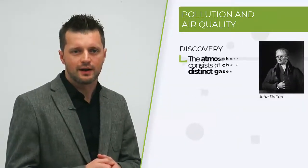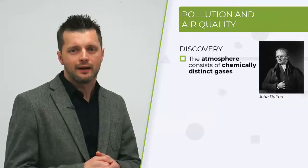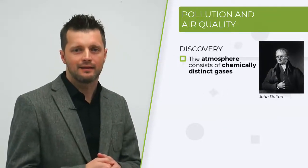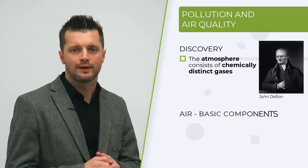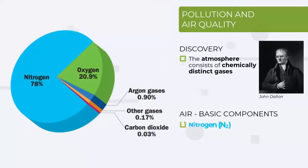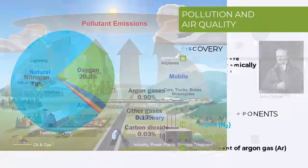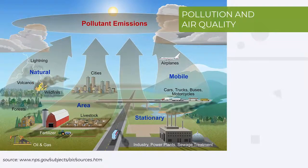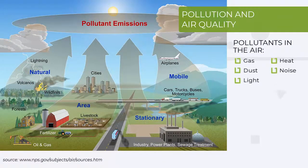At the beginning of the 19th century, scientist John Dalton discovered that the atmosphere consists of chemically distinct gases. Dalton identified the basic components of the atmosphere: nitrogen, oxygen, and a small amount of argon. Air pollution is defined as the release of pollutants contained in the waste gas into the atmospheric air from controlled or uncontrolled, mobile or stationary, intermittent or continuous sources.